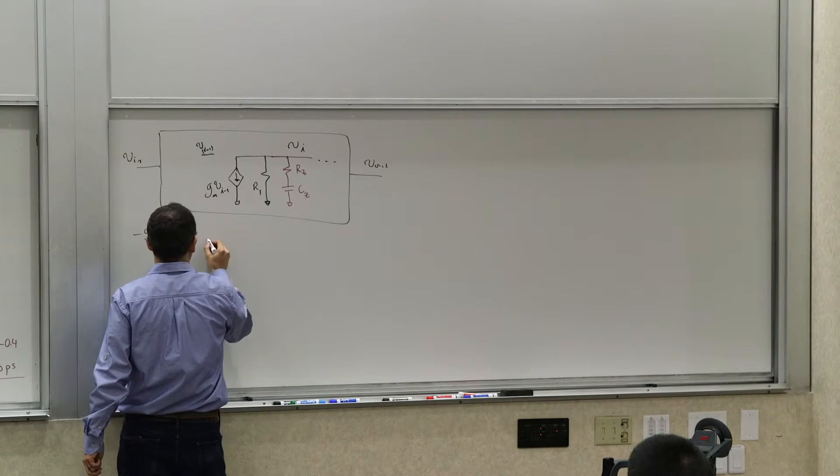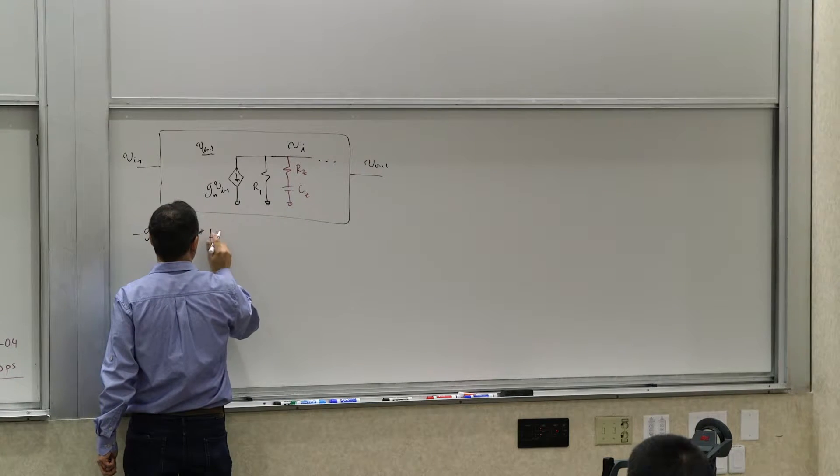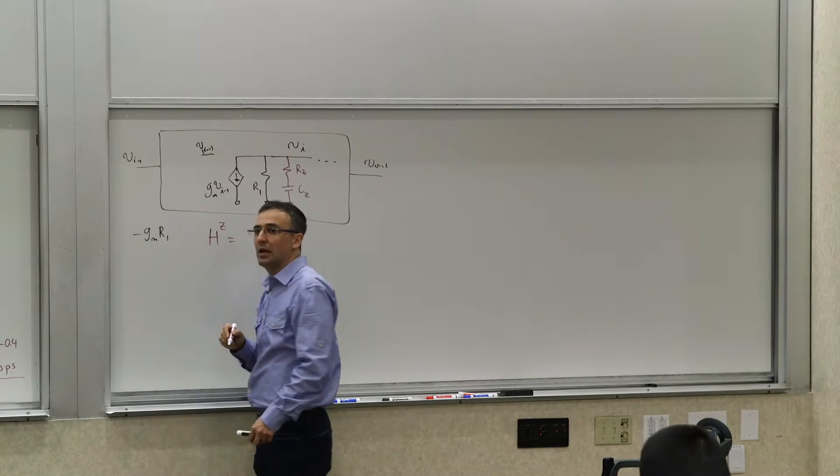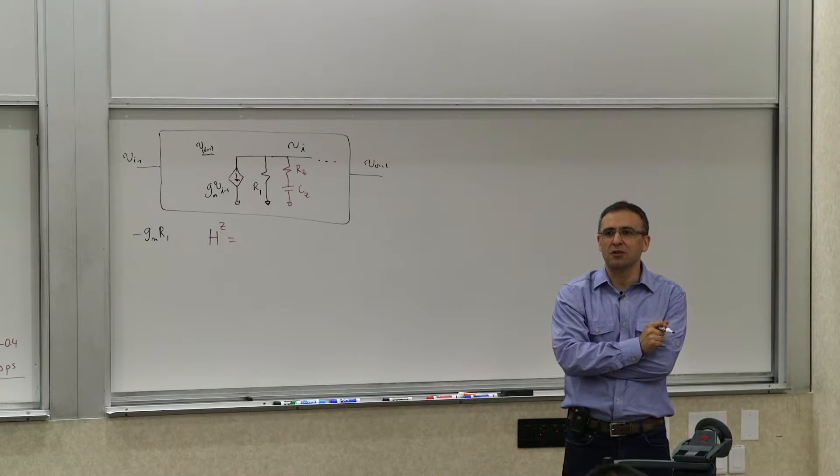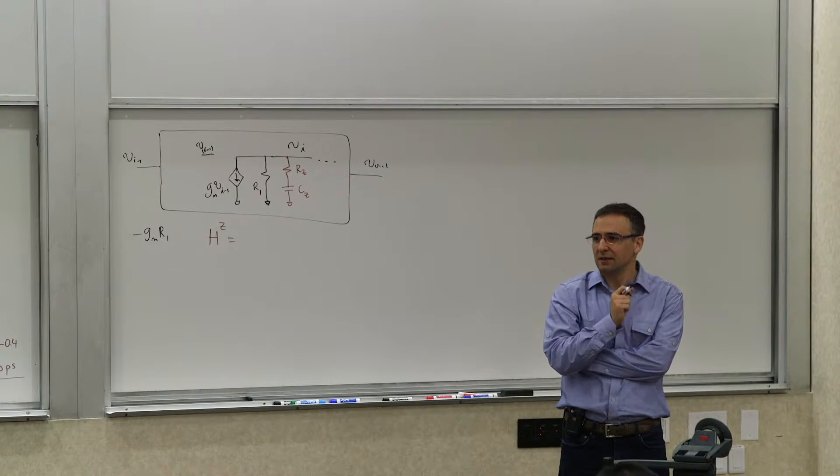So we can define there would be a transfer constant H of Z, right? In those calculations. What does H of Z mean? It's a transfer function with that capacitor infinite value.